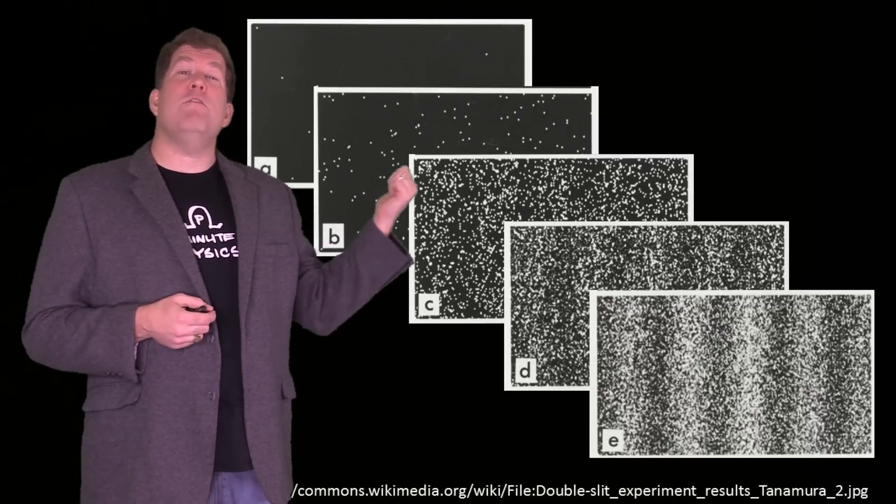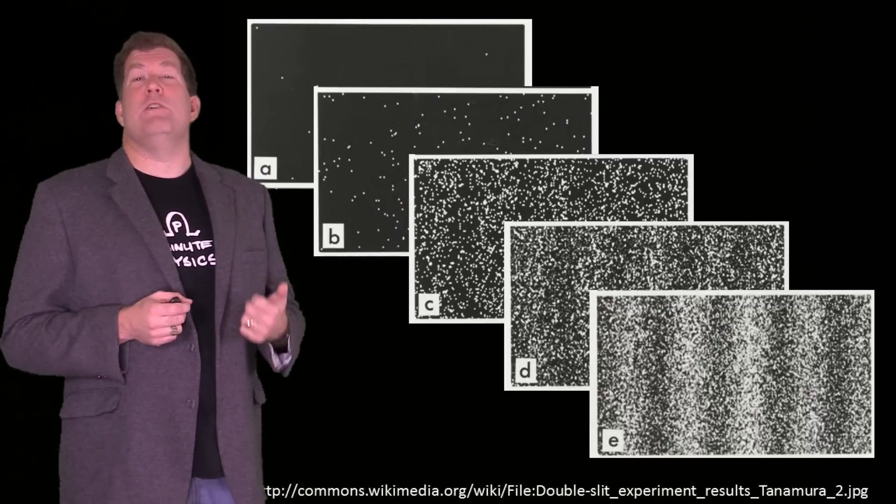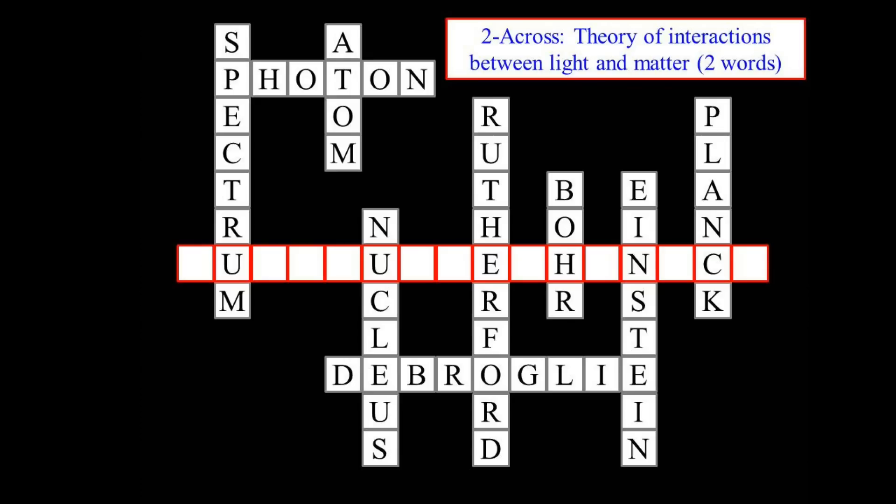Richard Feynman said that this experiment embodies the central mystery of quantum mechanics. Once you have the idea of particles behaving like waves and vice versa, everything else follows from that, like words filling in a crossword grid.